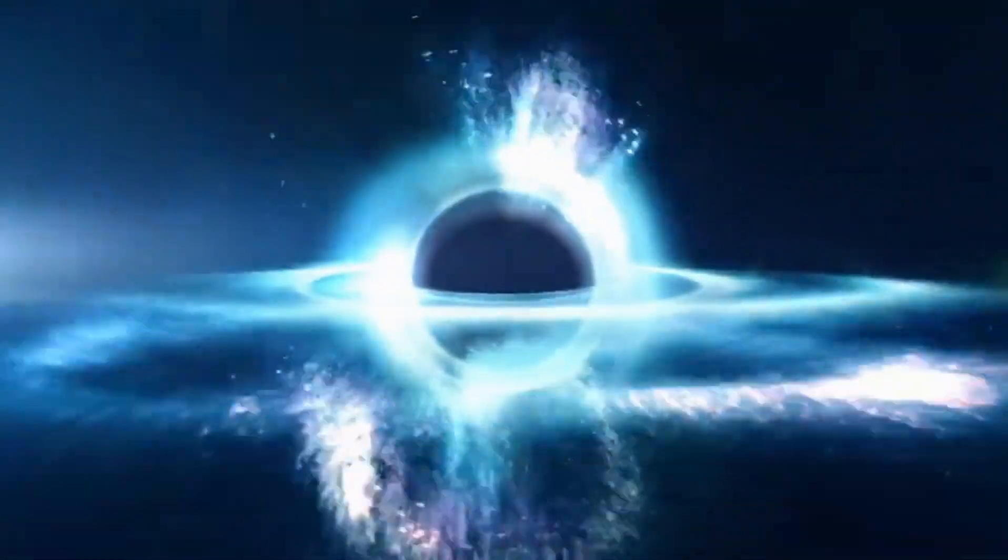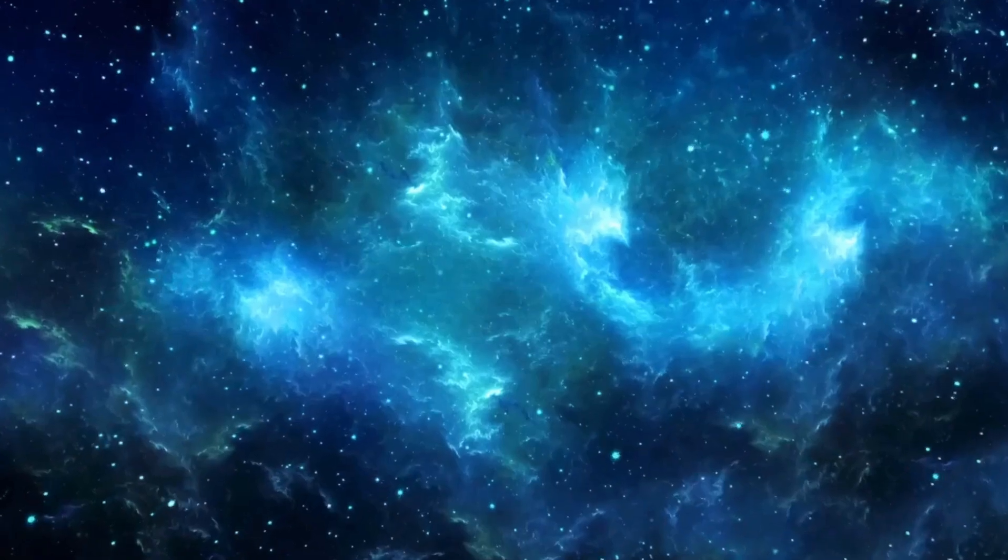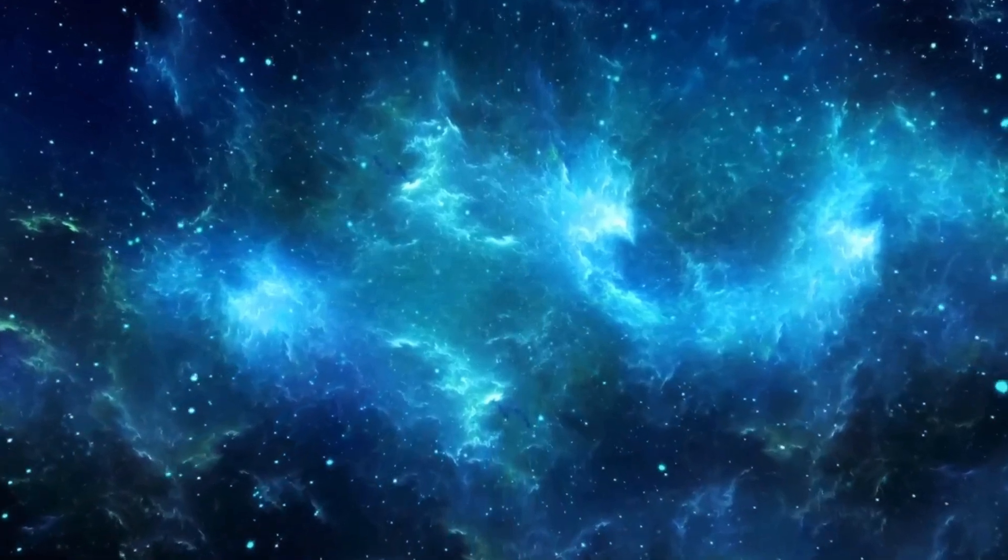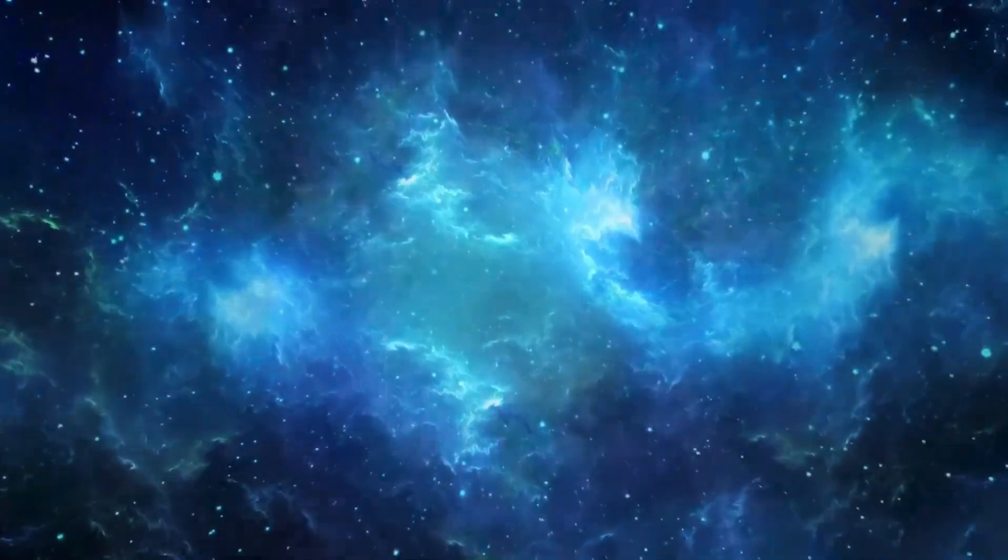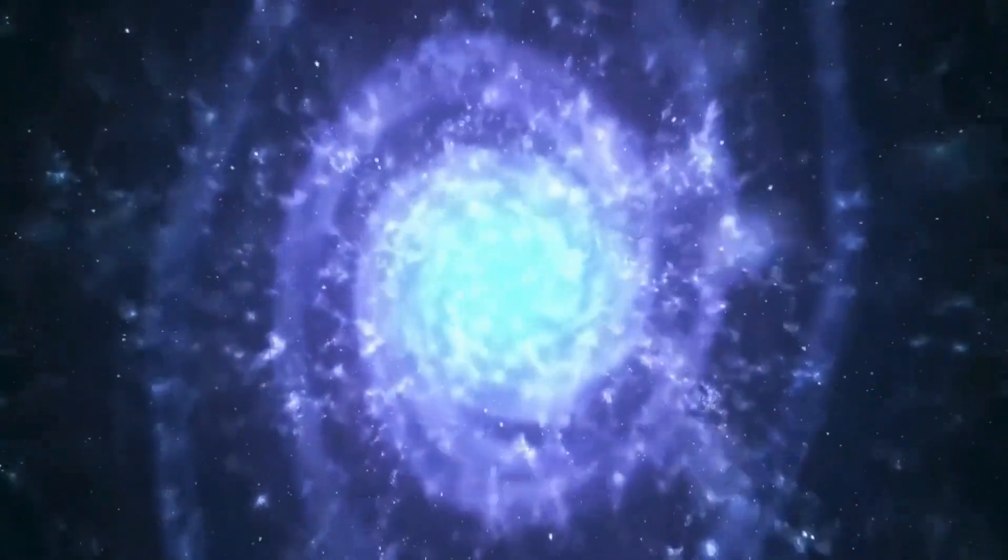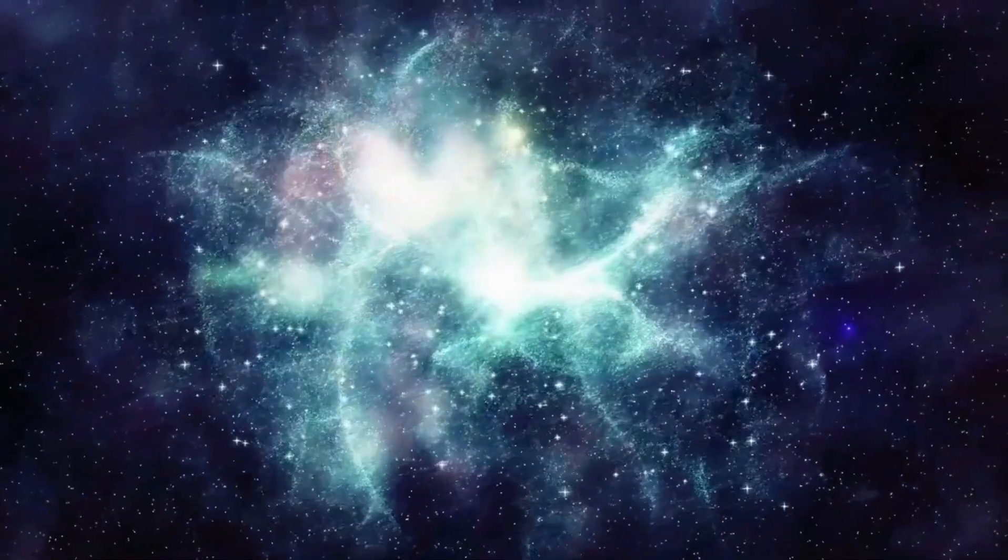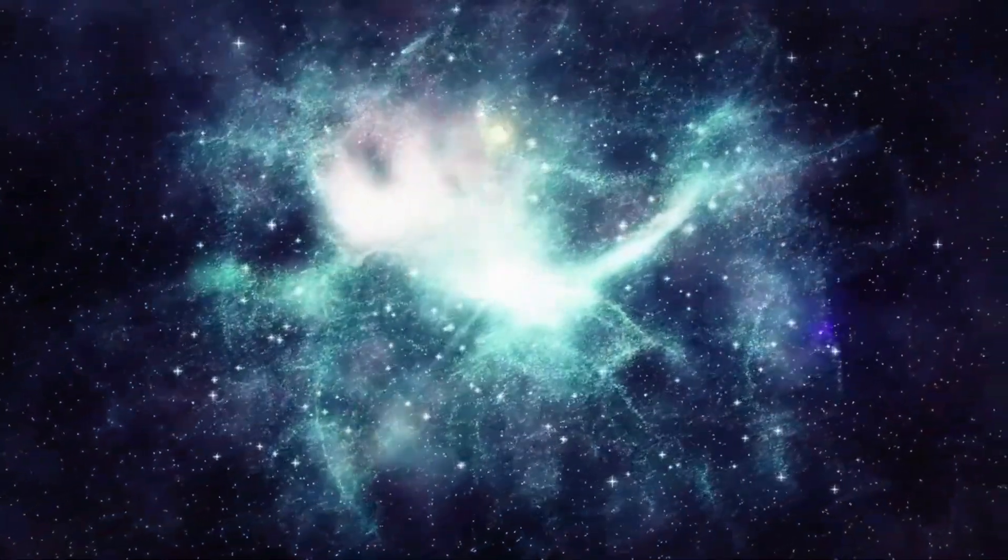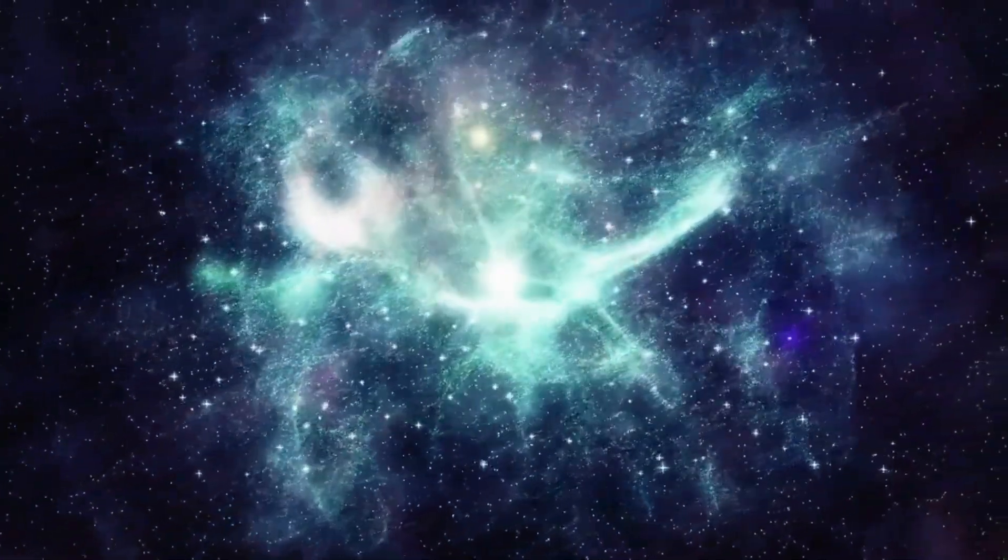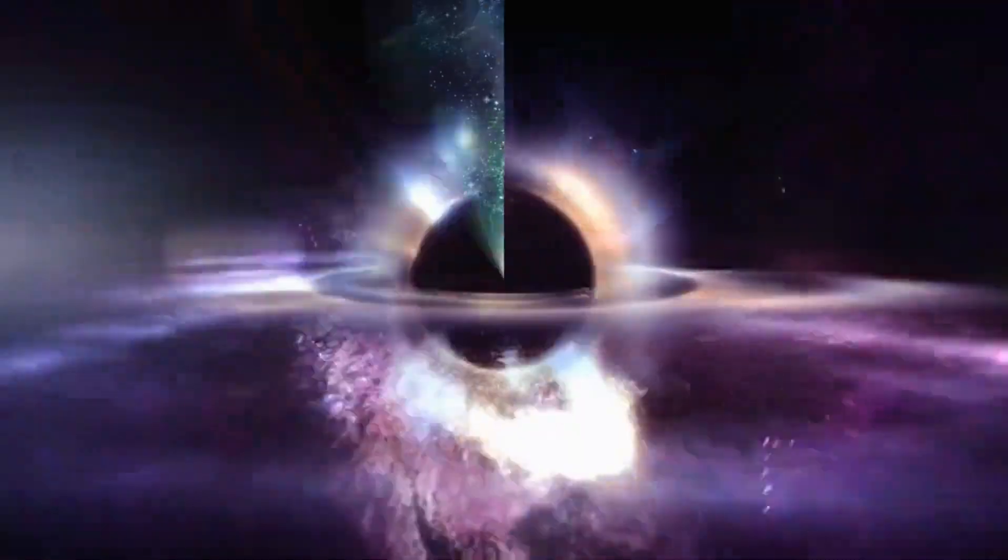Betelgeuse undergoes two dimming and brightening cycles, the second of which occurs approximately every 5 years and lasts approximately 100 days. The star's outer shell is thought to expand and contract during this cycle, changing the star's circumference and average temperature in accordance with each step of the cycle.